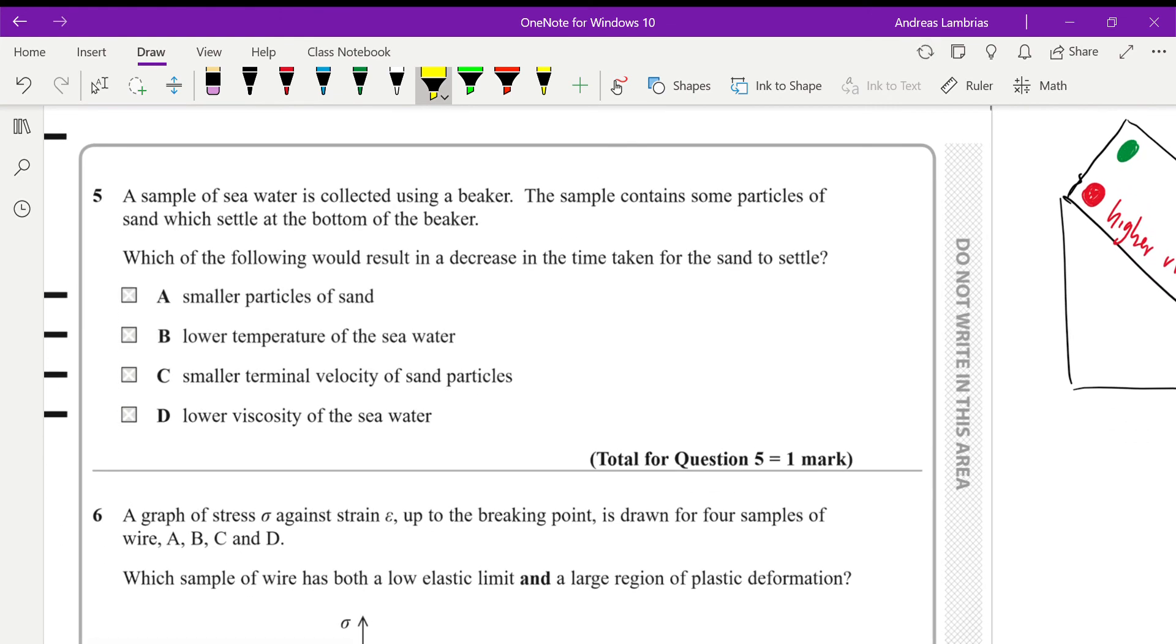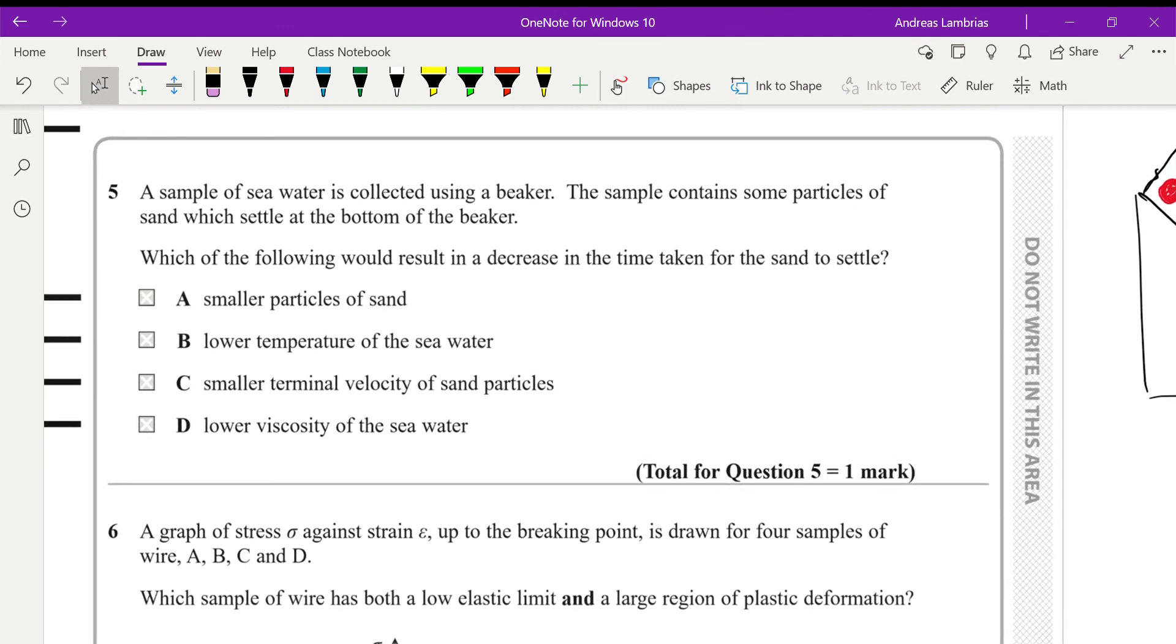Question 5: A sample of seawater is collected using a beaker. The sample contains some particles of sand which settle at the bottom of the beaker. Which of the following would result in a decrease in the time taken for the sand to settle? If we have the beaker with the water and the sand particles in, so if the viscosity of the seawater is low, what is viscosity? It's the resistance for something to flow. Therefore, if we have low resistance, so low viscosity, therefore the sand will settle to the bottom of the beaker much faster. Because low viscosity, this will result in a decrease in time. So in that case, this would be the answer.